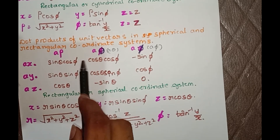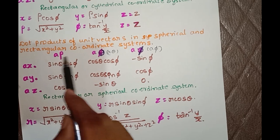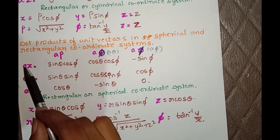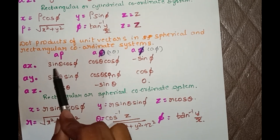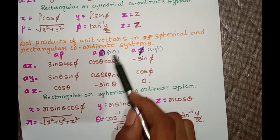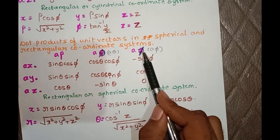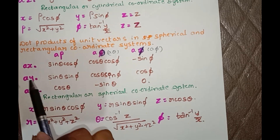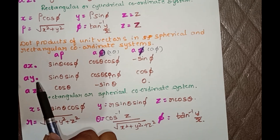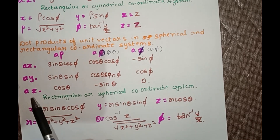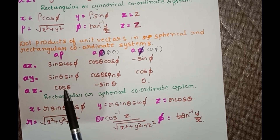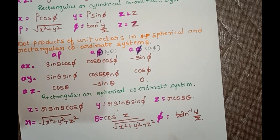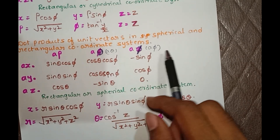In spherical coordinate system we have angles ρ (rho), θ (theta), and φ (phi). The dot products are: ax·aρ = sinθ cosφ, ax·aθ = cosθ cosφ, ax·aφ = −sinφ. ay·aρ = sinθ sinφ, ay·aθ = cosθ sinφ, ay·aφ = cosφ. az·aρ = cosθ, az·aθ = −sinθ, az·aφ = 0. These are the dot products for the spherical coordinate system.